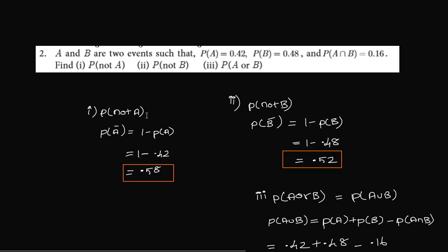So P(not A) is P(A dash). A dash is not A. So P(A) plus P(A dash) equals 1. P(A) value is 0.42. So 1 minus 0.42 is 0.58.